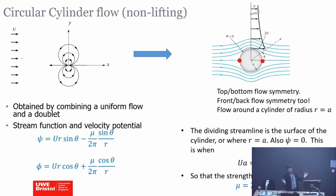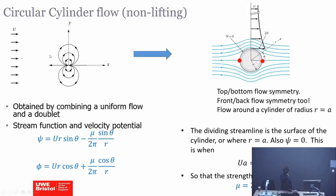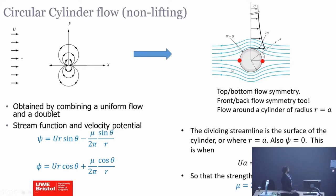We are aerospace engineers — we want, at the end, flow around an airfoil or a wing. To get a non-lifting flow around the circular cylinder — meaning no lift is produced — we take a uniform flow and superimpose it with a doublet. If you do that, you get exactly the flow around the circular cylinder. The dividing streamline, the thick line, can be replaced by a circular cylinder of the same shape, meaning we are actually modeling the flow around the circular cylinder.